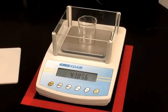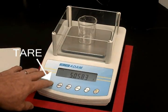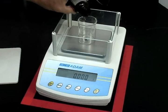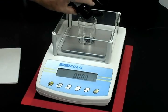Place the container on the pan and tare the balance. Taring is the act of resetting the balance to zero in order to discount the mass of the container.